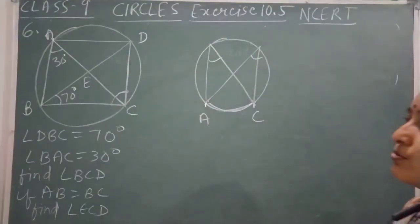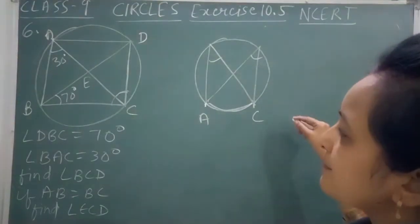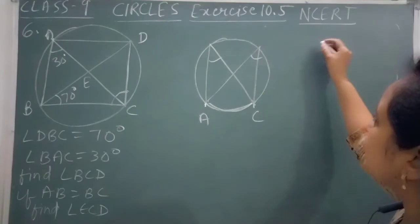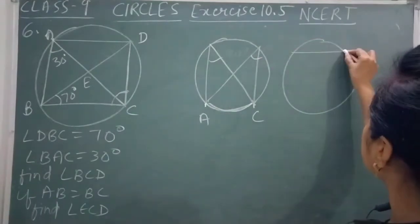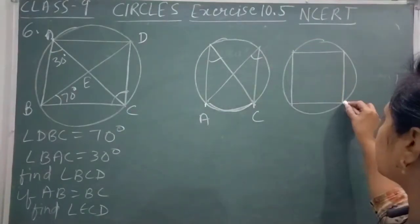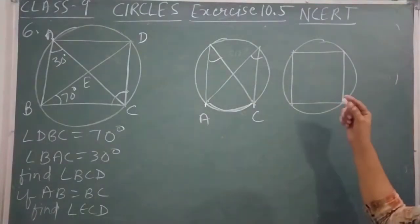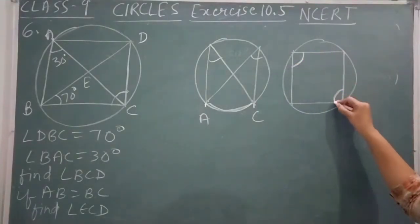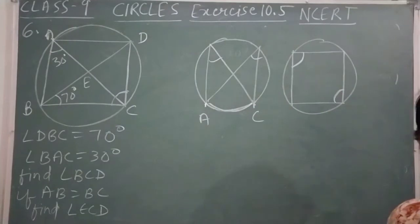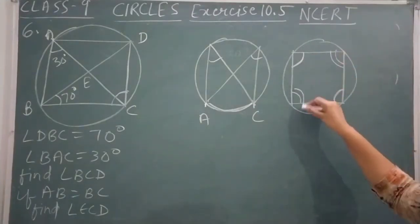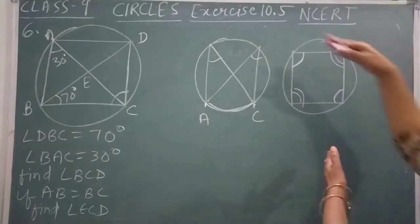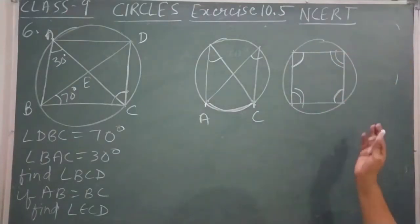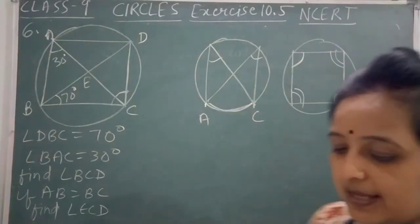The second theorem we use is cyclic quadrilateral. Cyclic quadrilateral means what we call circle quadrilateral. In cyclic quadrilateral, opposite angles sum to 180 degrees. So these two opposite angles sum to 180 degrees. These are the two theorems we use in this question.